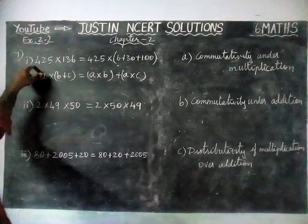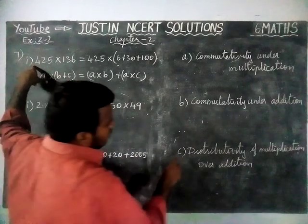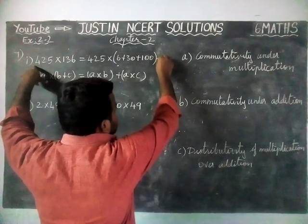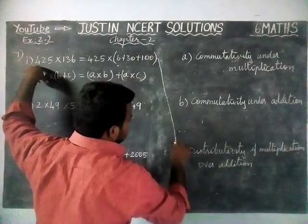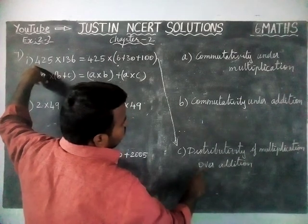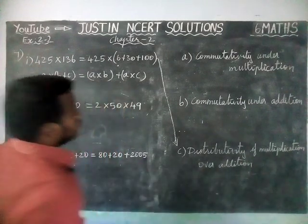So the first question answer is option C — distributivity of multiplication over addition.